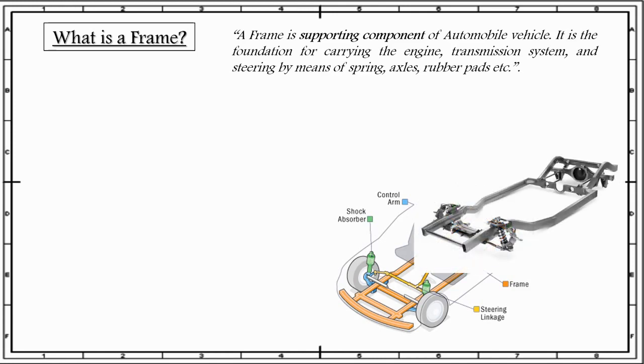As we can see, this is an example of a frame. We can see the springs are attached to the frame. Based on the configuration, the engine can either be placed in the front over here, or in the back, or in the middle.